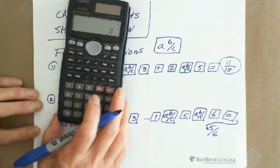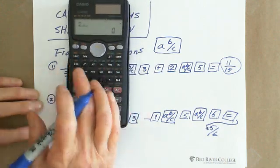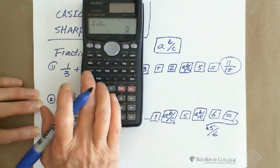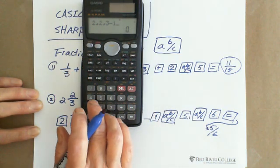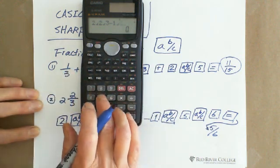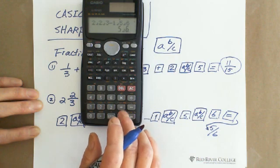To review: 2 ABC 2 ABC 3 minus 1 ABC 5 ABC 6 equals 5 over 6.